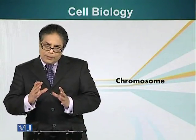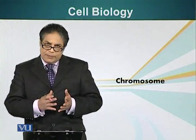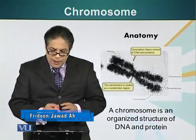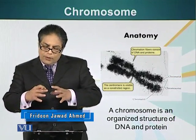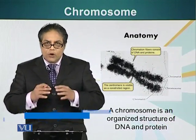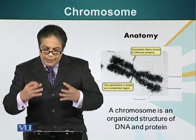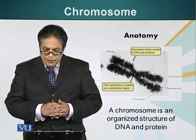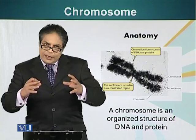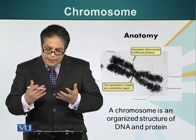Now let us look at some of the players in cell division. One of the most important players is the chromosome. Let us look at its structure. Chromosomes are generally not visible in cells which are in G1 phase — they are unwound, loose, and not present as discrete structures. When the cell decides to divide, chromosomes become condensed and they become visible under the microscope.